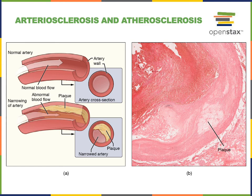An atherosclerotic plaque includes a deposit of lipids, leukocytes, and minerals like calcium. The process of atherosclerosis is initiated with damage to the endothelium of a blood vessel.